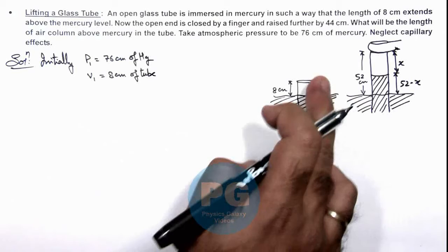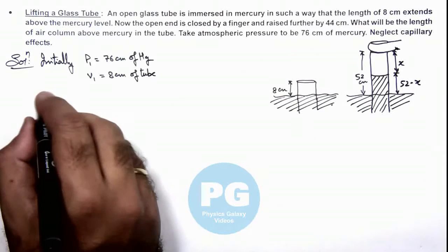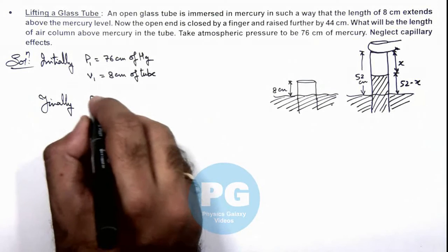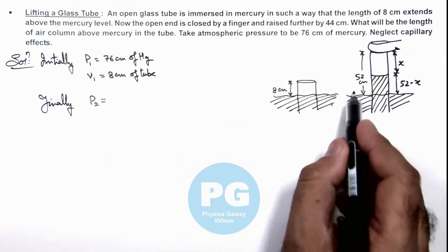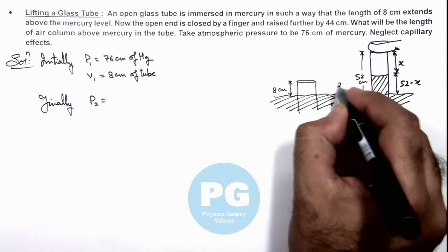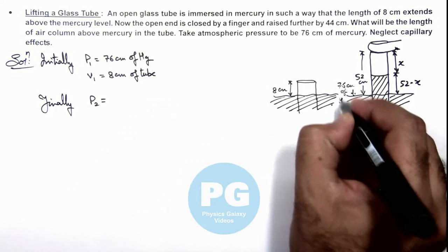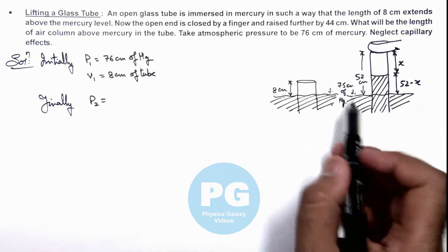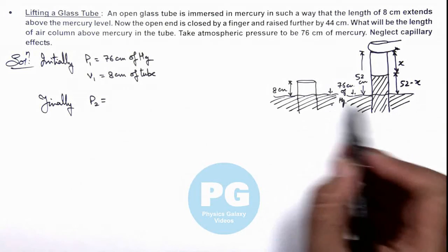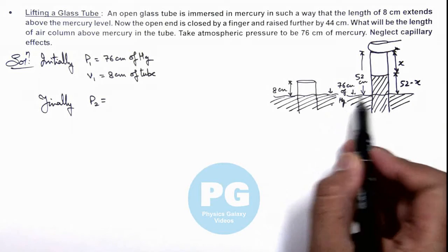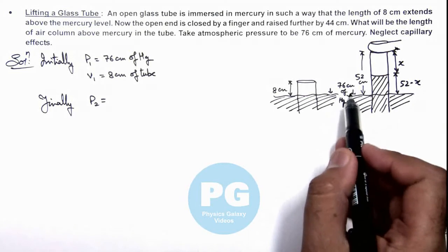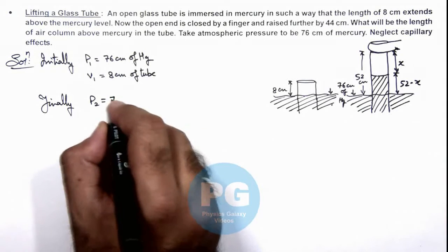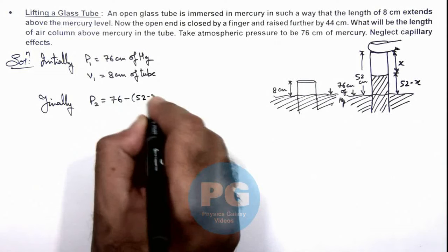If we close it and lift it up, finally the pressure in the tube can be written as, here pressure is still acting as 76 centimeters of mercury because this is the atmospheric level. At this point pressure will be 76 minus 52 minus x, so this will be 76 minus 52 minus x.